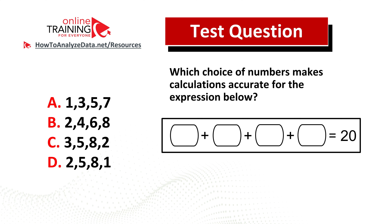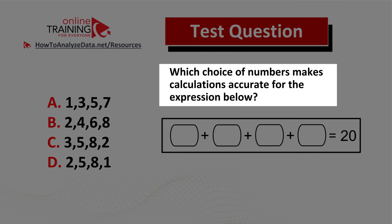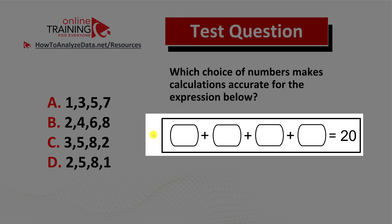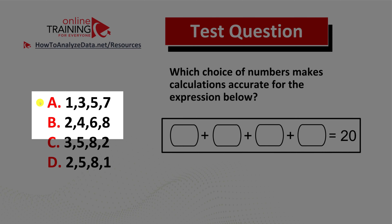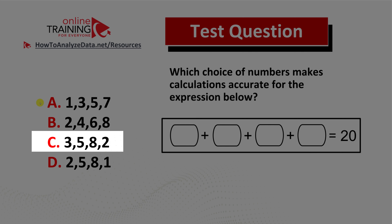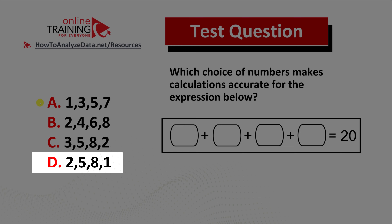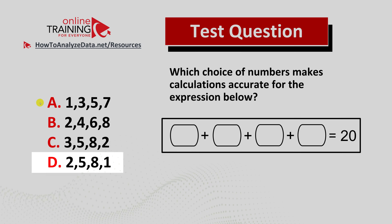Here is a question we see very frequently on the test. Which choice of numbers makes calculations accurate for the expression below? You have an expression where four numbers need to be added up to get a result of 20. The four choices are: choice A: 1 3 5 7; choice B: 2 4 6 8; choice C: 3 5 8 2; and choice D: 2 5 8 1. Please pause this video and try to get to the right solution.